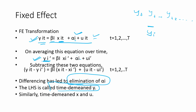The left-hand side of this differenced equation is known as the time-demeaned Y. This is the technical term — time-demeaned means we've removed the time component. Similarly, we have time-demeaned X values for the independent variables and the error term. Now let's apply this concept to our case study.